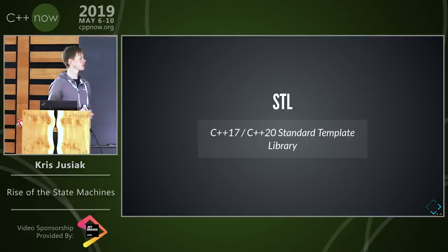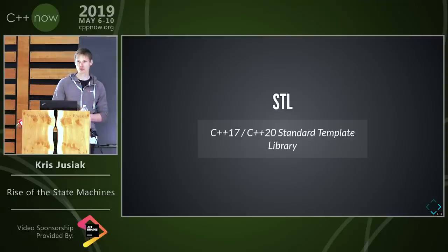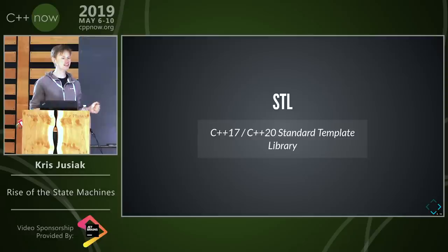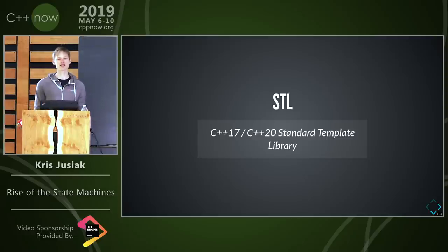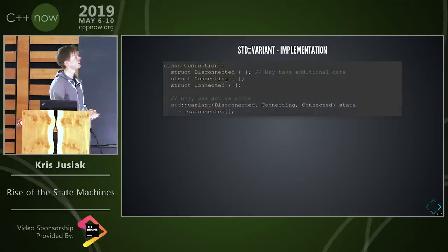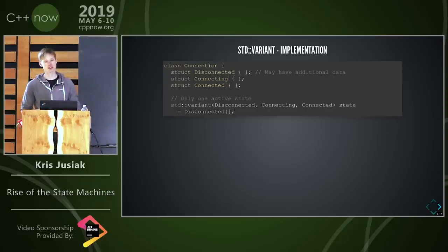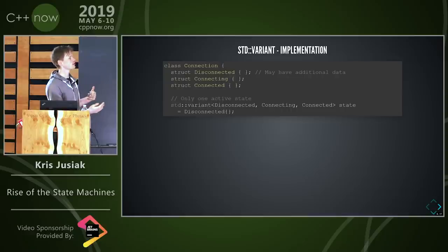In C++17 and C++20 we gained new ways of implementing state machines that are more exciting than the old-style naive approach. Let's dig into that: variant is very useful for implementing simple state machines because it's a type-safe union in which only one state may be active.